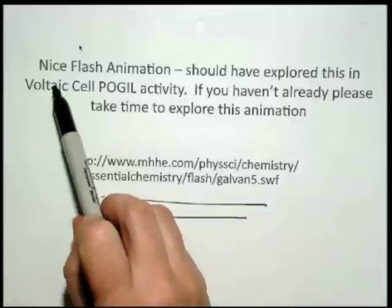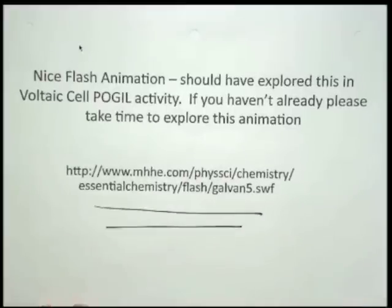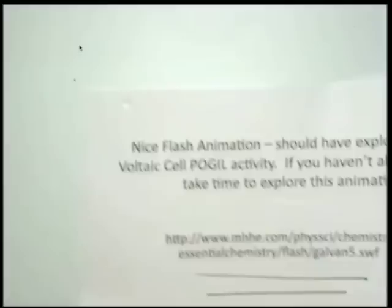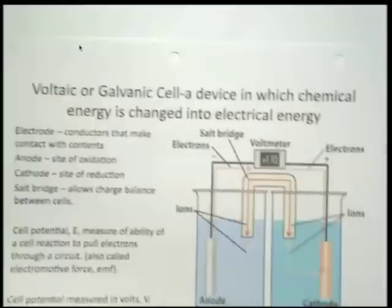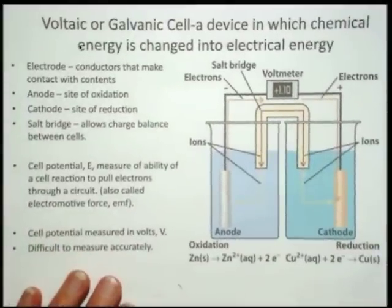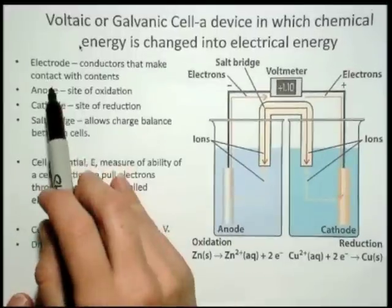So what you need to do is make sure that you and your partners go through this flash animation, because I'm expecting you to know all the parts of the electrochemical cell, in particular the galvanic cell. And here is just a summary slide of all the parts of the cell that you should be aware of after going through the activity.